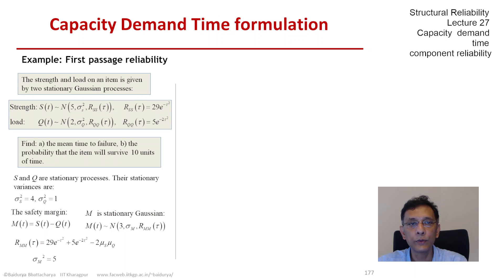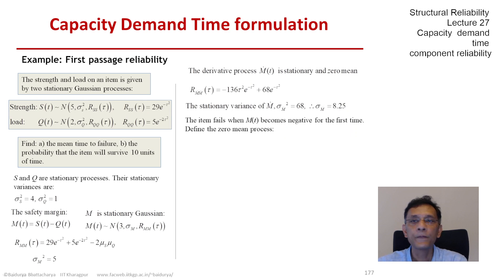Let us see what we have learned so far. We have found that the stationary standard deviation of M dot is 8.25. Now let us try to find the answer. Our item fails when M(t) becomes negative for the first time, but we need to come to a zero mean process.